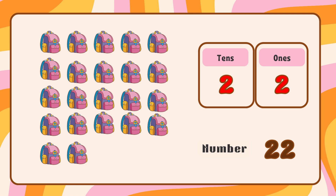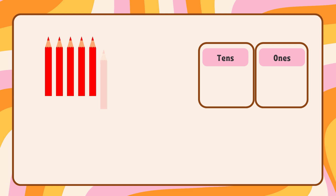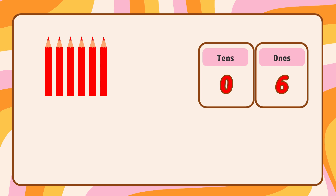Let's look at one more example. We have some pencils. Let's count them. 1, 2, 3, 4, 5, 6. We have 6 ones. We don't have any tens. So 0 tens and 6 ones. So it's number 6.